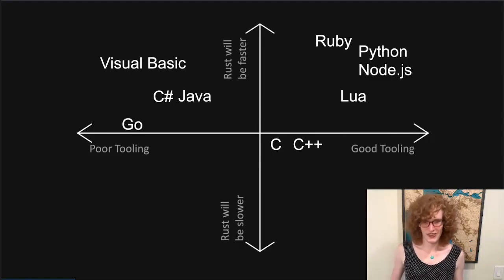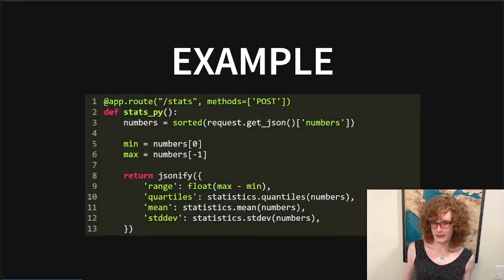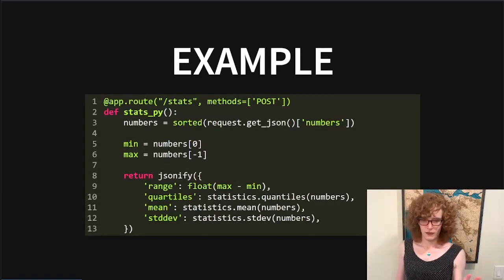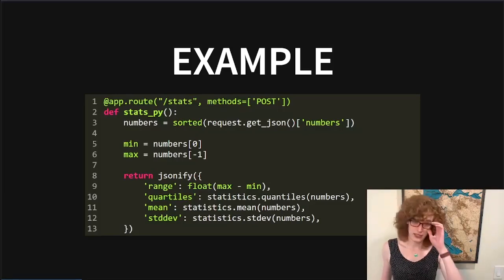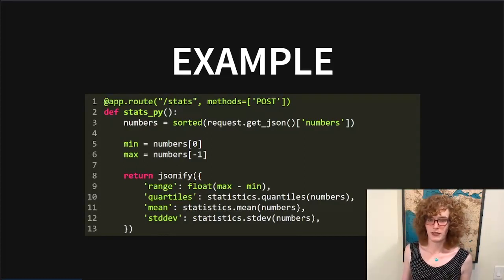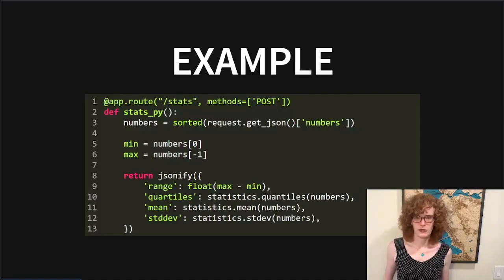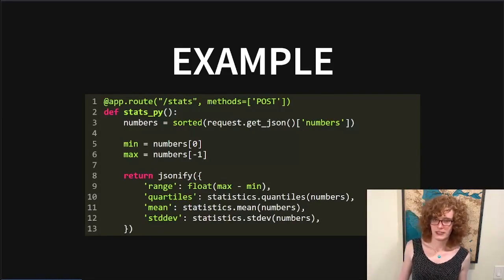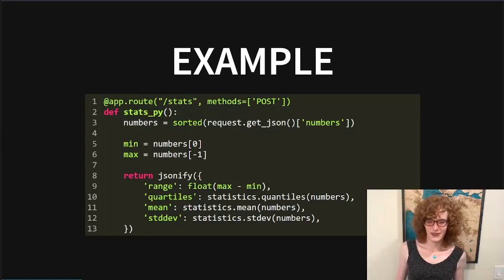For the purposes of having a concrete example, we're going to imagine you're a developer working on a Flask HTTP server application written in Python. We'll look at one handler that takes in a list of numbers in a JSON request POST body and computes several statistical properties: the range (difference between max and min), the quartiles (25th, 50th, and 75th percentiles), the mean, and the standard deviation. Let's see how we can do an FFI refactor and rewrite this in Rust.